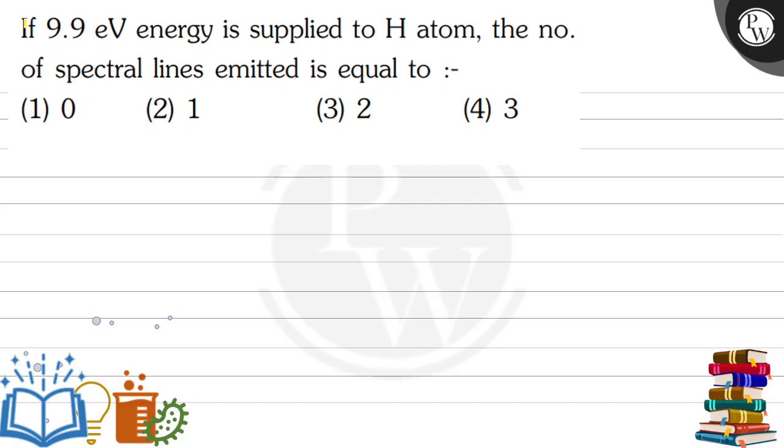Hello, let's look at the question. If 9.9 electron volt energy is supplied to hydrogen atom, the number of spectral lines emitted is equal to - we have four options here: option one is zero, option two is one, option three is two, and option four is three.